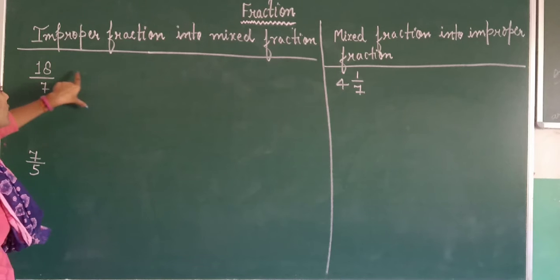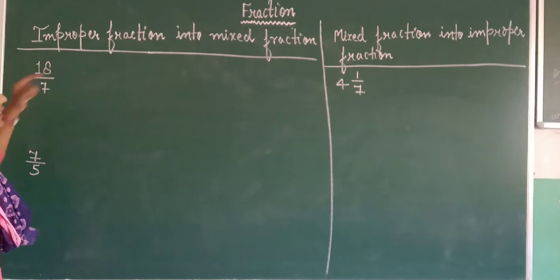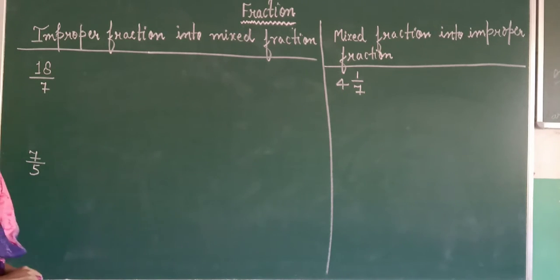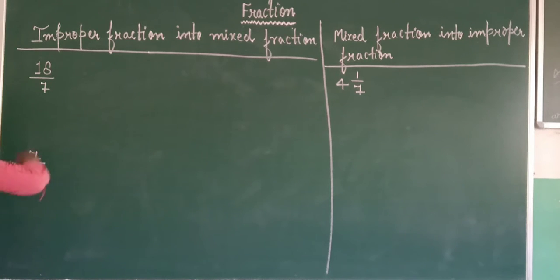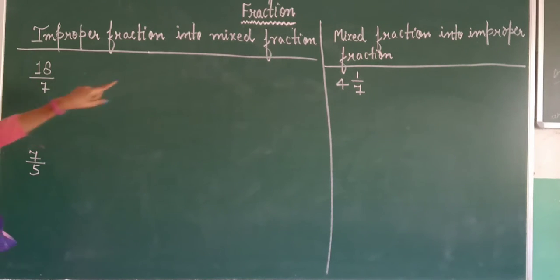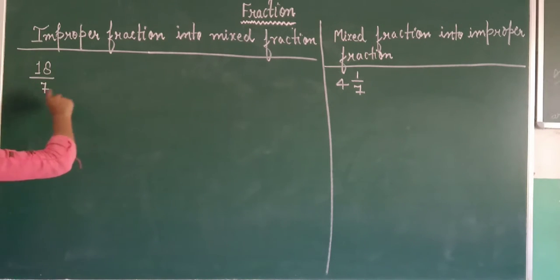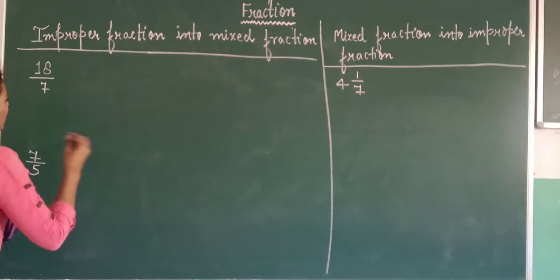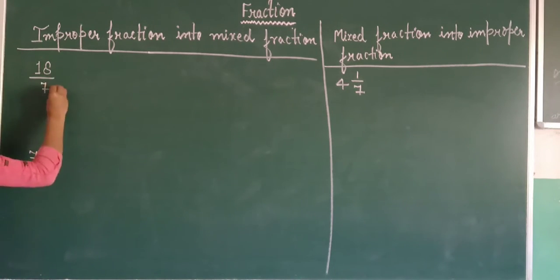Improper fraction ko mixed fraction mein kaise change karte hain — aap sab ko bataya hai ki improper fraction kya hota hai. Jo proper way mein nahi hota, jiska numerator zyada ho aur denominator kam ho, wo hota hai improper fraction. Ab isko mixed fraction mein change karna hai, means whole number ke saath numbers mein.